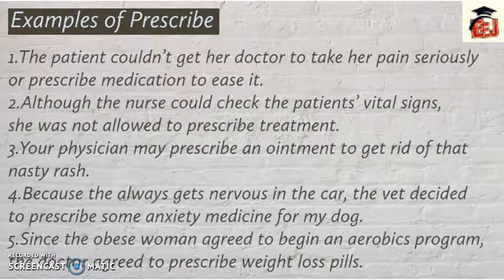Third example: 'Your physician may prescribe an ointment to get rid of that nasty rash.' So your physician can tell you some kind of ointment to remove the rash from your body. Fourth example: 'Because he always gets nervous in the car, the vet decided to prescribe some anxiety medicine for my dog.' There are people who have anxiety around dogs, so the vet advised some medicine.